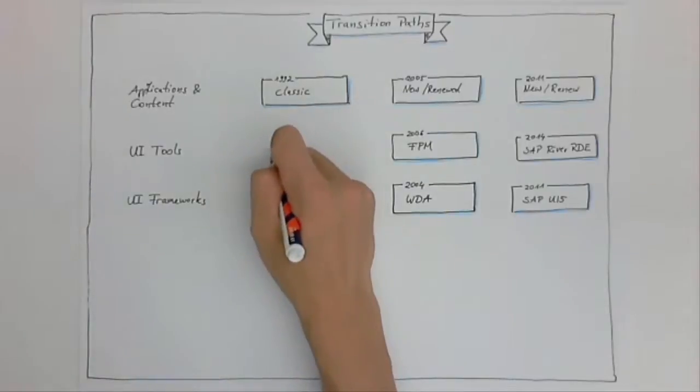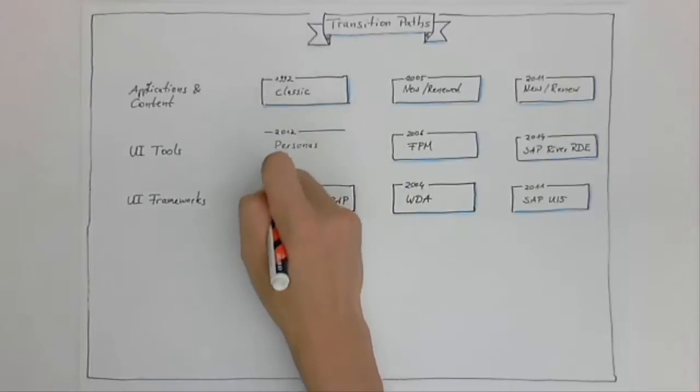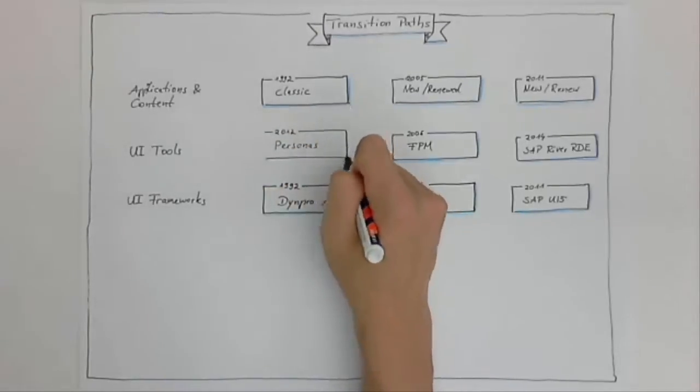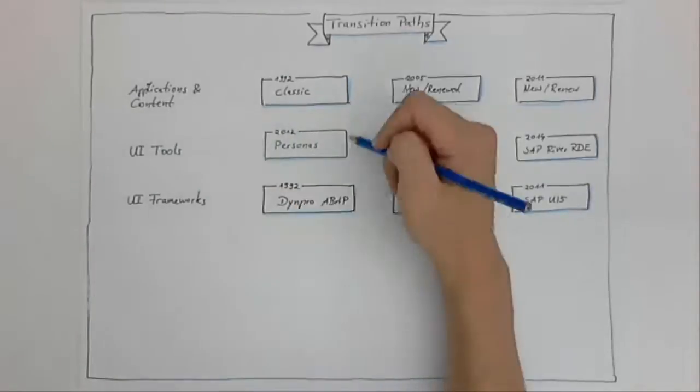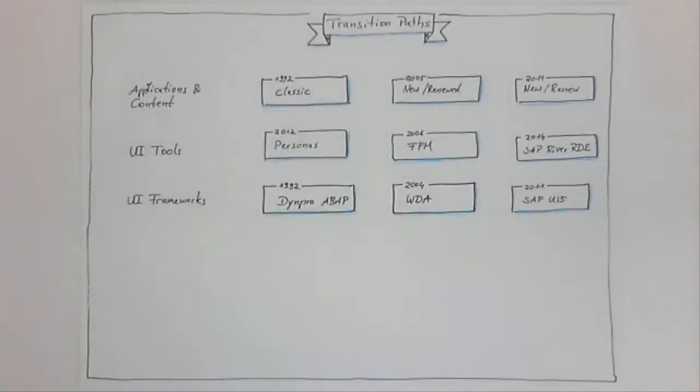You might wonder whether SAP Screen Personas fits in this picture, and of course it does, as it closes a very important gap. In 2012, SAP Screen Personas makes it possible to easily adapt existing DUN Pro ABAP applications. However, and this is why I didn't want to mention it earlier, it is not designed to develop new applications. As such, this is the main difference when compared with floor plan manager and SAP River RDE.